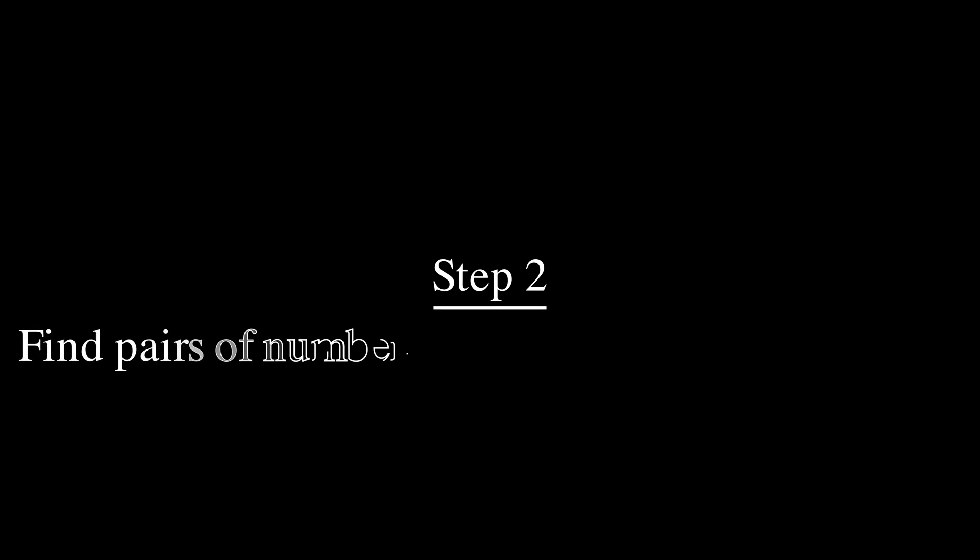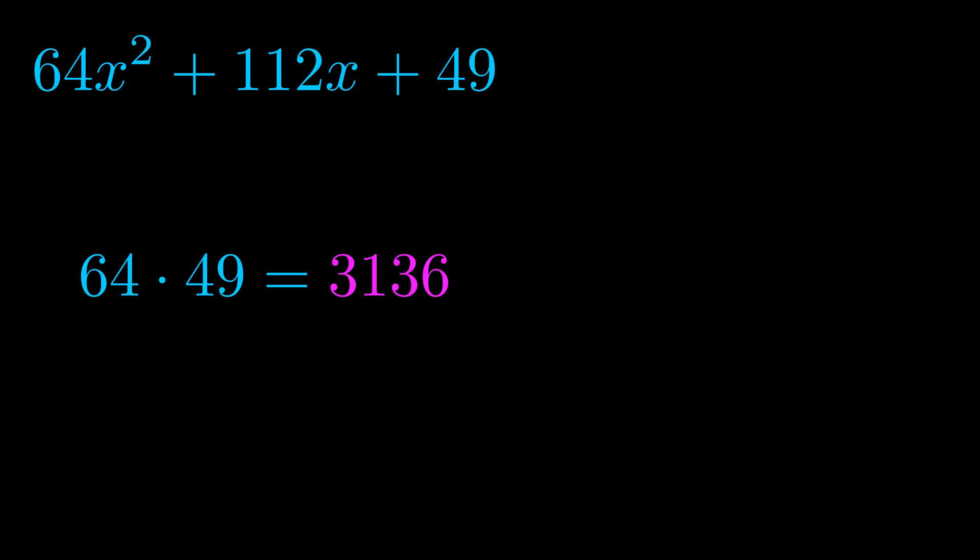Step two is to try to find all of the pairs which multiply to this number. Now it turns out you don't really need to find all of them but go ahead and write down as many numbers as you can that multiply to the magenta value for now. Pause the video and resume when you're ready to continue.